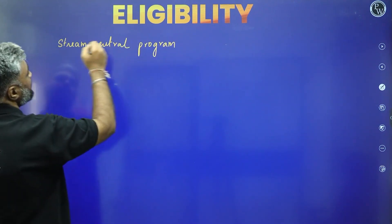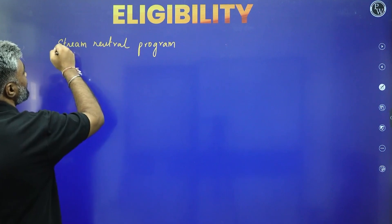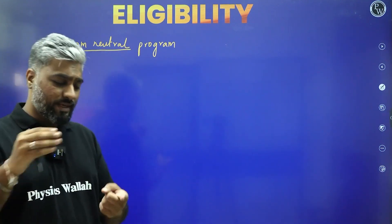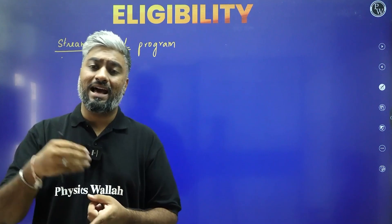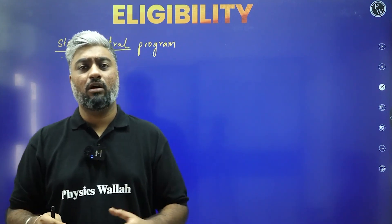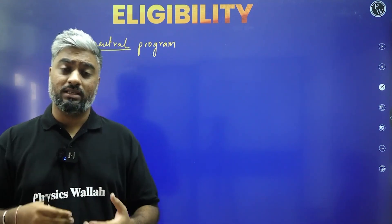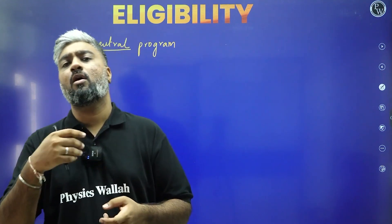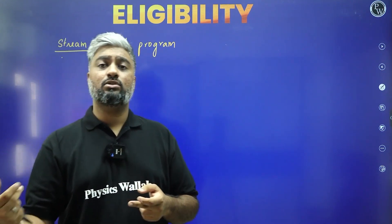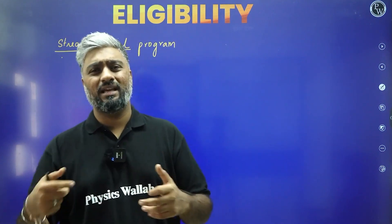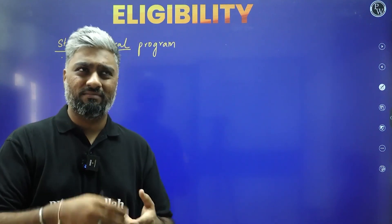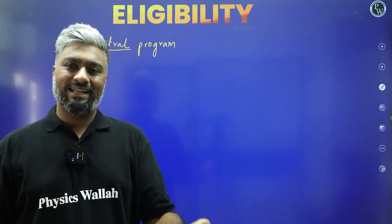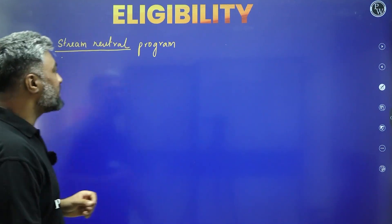Stream neutral means it does not matter which stream you are from. You could be a science student, a commerce student, an arts student — irrespective of whatever your background is. Even within science, you can be a computer science student or a biology student. PCM, PCB, PCMB — whatever the combination, it doesn't really matter for the IPM course.